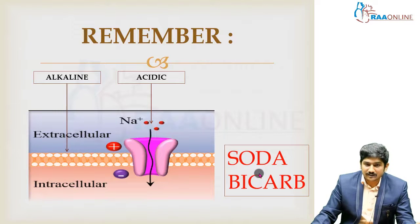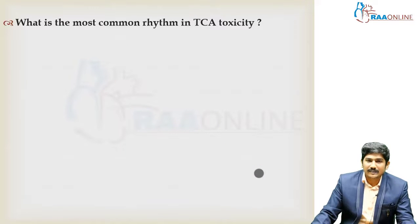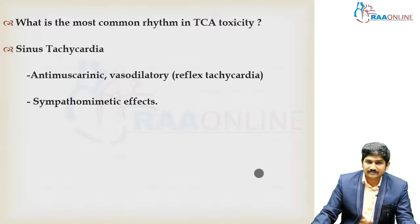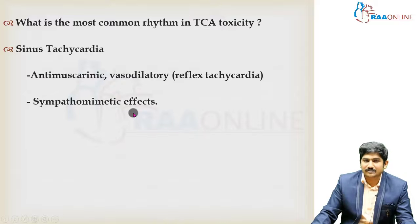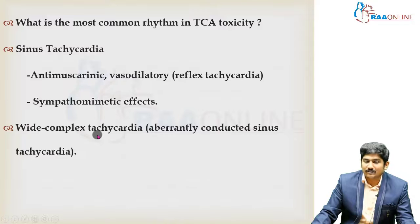So how will you give it? When will you give it? How long will you give it? When will you stop? We'll see that. Coming to the cardiovascular system — what is the most common rhythm in TCA toxicity? It's going to be sinus tachycardia. It could be because of anti-muscarinic effect, vasodilatory reflex tachycardia, or primarily sympathomimetic effects. So the most common rhythm is sinus tachycardia.